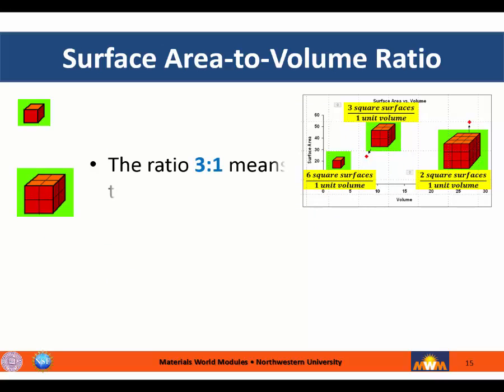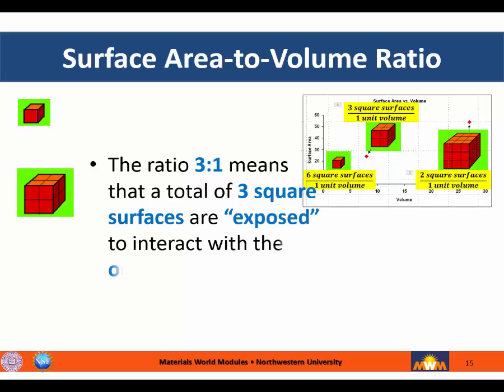The ratio of 3 to 1 for the middle cube means that a total of three square surfaces are exposed to interact with the outside environment for every unit of cube volume.